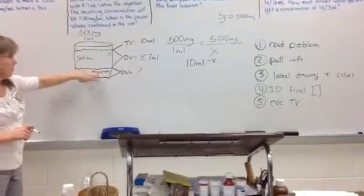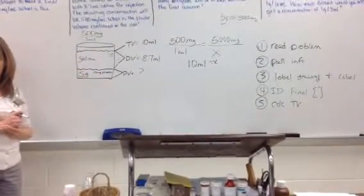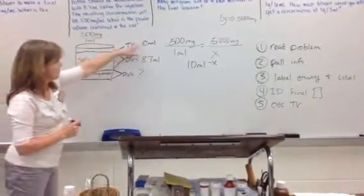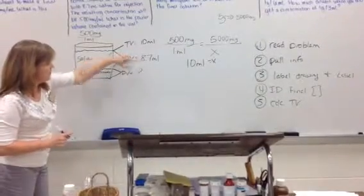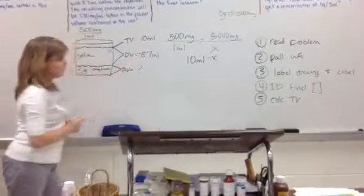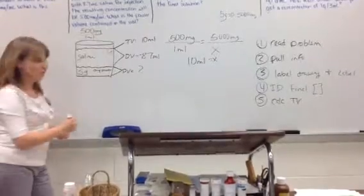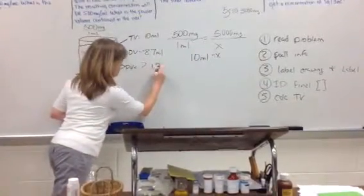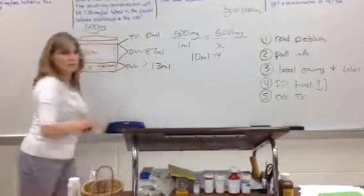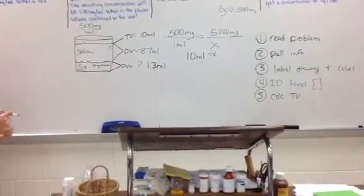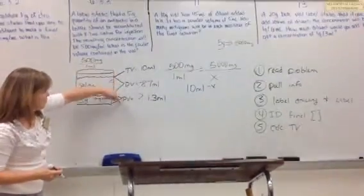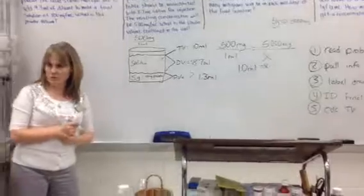The powder amount down here. So this is the 10 mLs here. You're going to subtract that from 10 minus 8.7 and get 1.3. And this is the powder volume. Because we know that the diluent volume plus the powder volume is equal to the total volume.